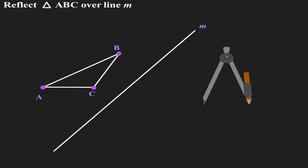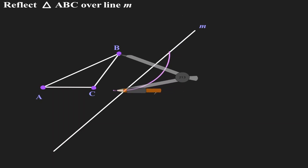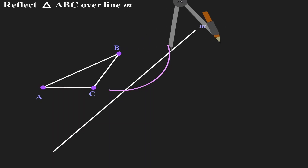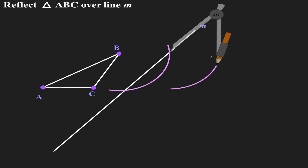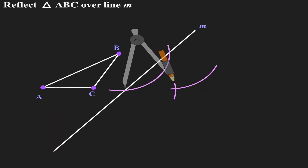Let's get our compass and place the metal leg on point B. Now let's open the compass so that it intersects the line at two different locations. Without changing the length, let's place the compass at the first intersection and make a mark on the inside. Then move the metal leg to the second intersection and look for the intersection from the previous mark. The intersection we've just found is where we get the image of B, so let's call it B'.